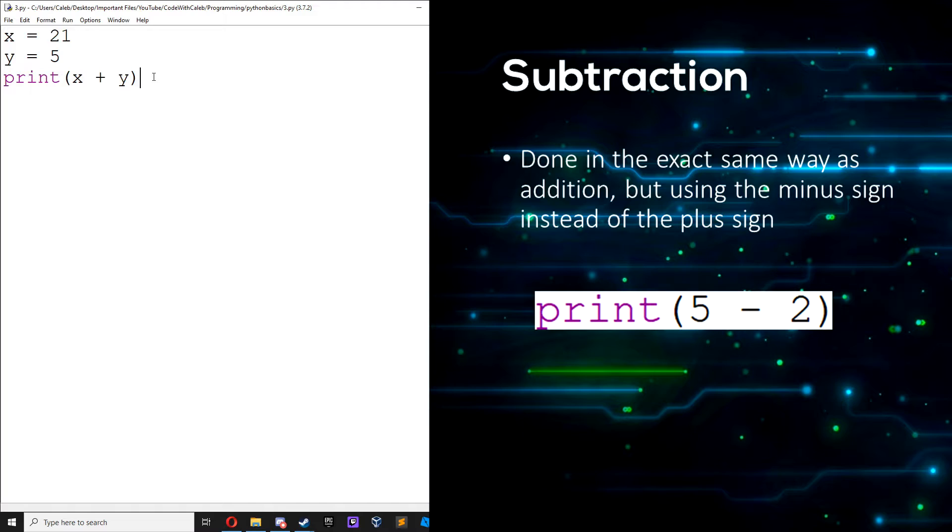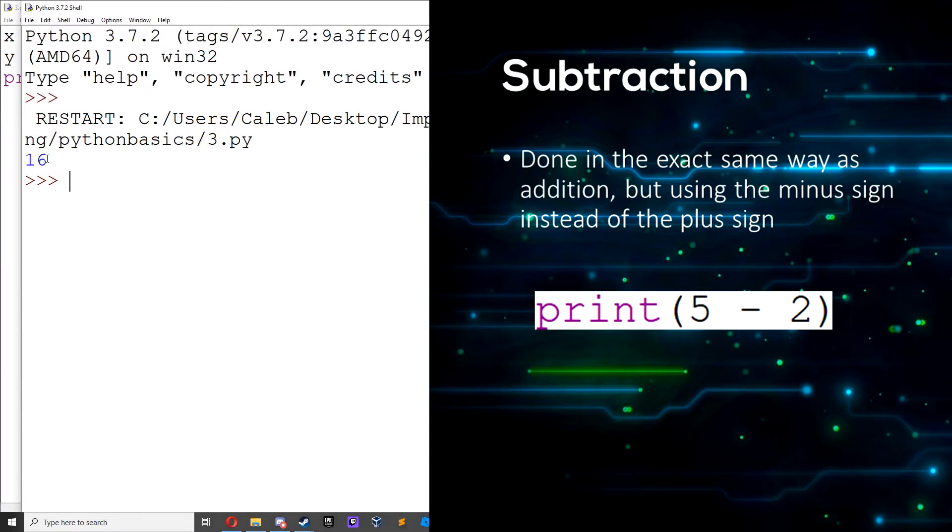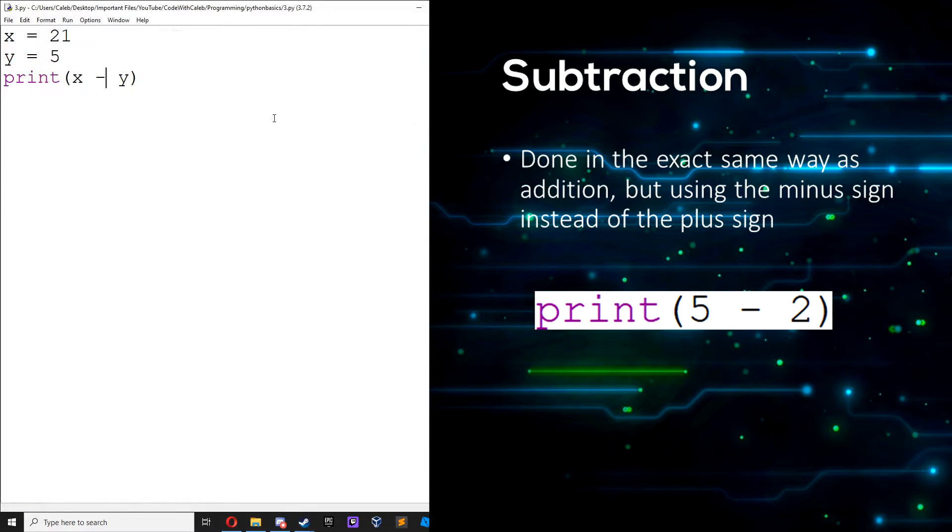Now for subtraction, we can do it exactly the same as how we did addition, but we use a minus sign. So we can save it, run, run module, and we get 16 because 21 minus 5 is 16.